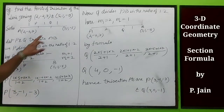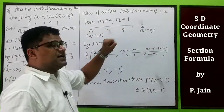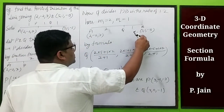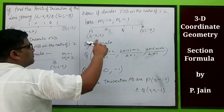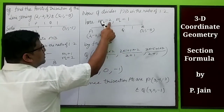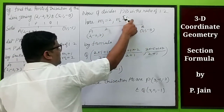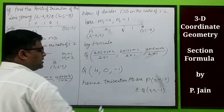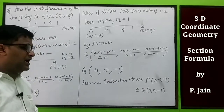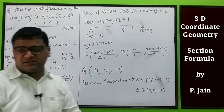Now Q divides AB in the ratio 2 is to 1, so M1 is 2, M2 is 1. (x1,y1,z1) = (2,-2,7) and (x2,y2,z2) = (5,1,-5). By the formula: x = (2×5 + 1×2)/(2+1) = 4, y = (2×1 + 1×(-2))/(2+1) = 0, z = (2×(-5) + 1×7)/(2+1) = -1. So coordinates of Q are (4, 0, -1). Hence the points of trisection are P(3,-1,3) and Q(4,0,-1).